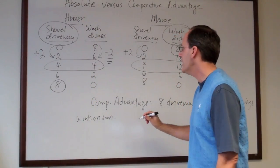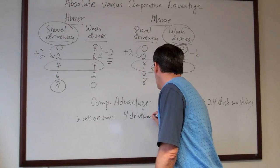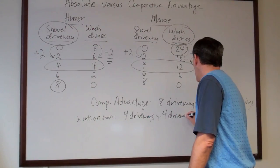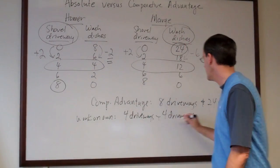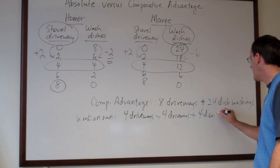What you get is four driveways from Homer plus four driveways from Marge plus four dish washings from Homer and 12 dish washings from Marge.